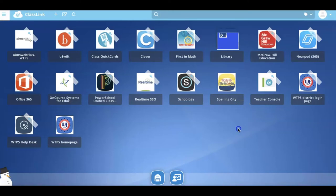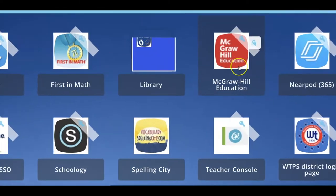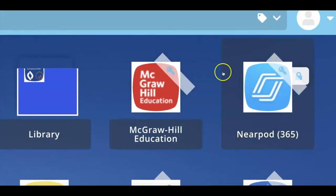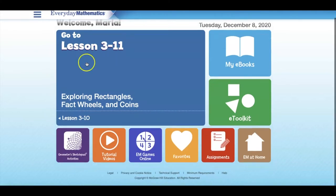Once you are in your ClassLink, you're going to have to find the McGraw-Hill Education app. When you find the McGraw-Hill Education app, you're going to tap on it and then you will come to your ConnectED account.